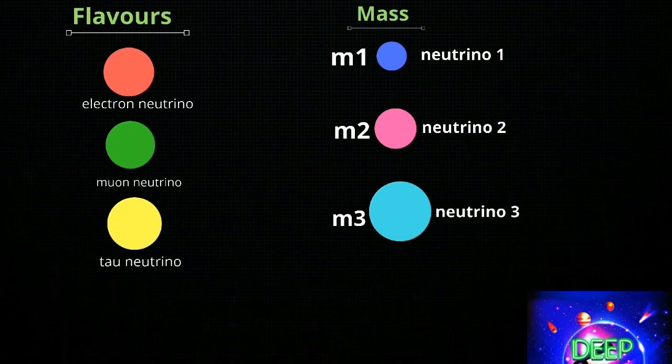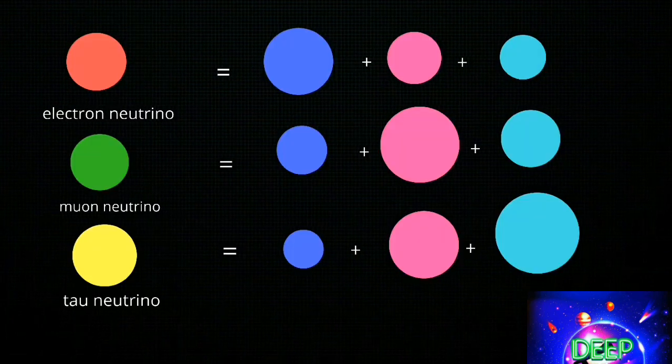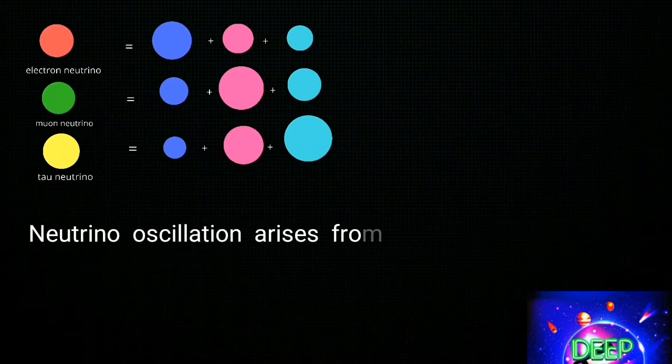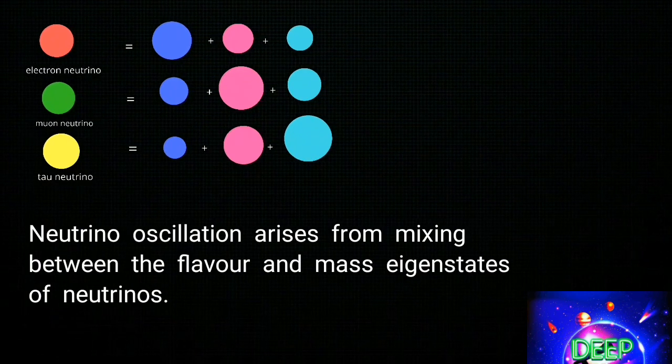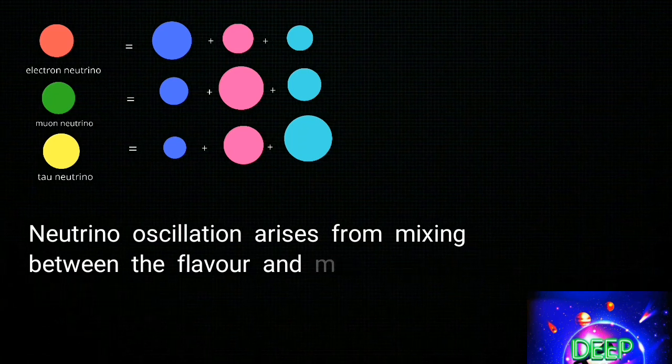Neutrino oscillations arise from mixing between the flavor and mass eigenstates of neutrinos. The principle of superposition allows flavor state neutrinos that interact to produce electrons, muons, or taus to be combinations of three neutrino states with definite mass.